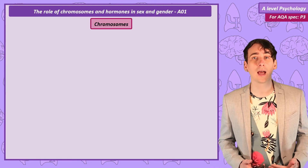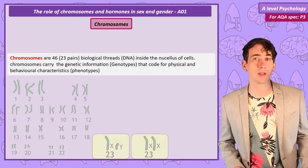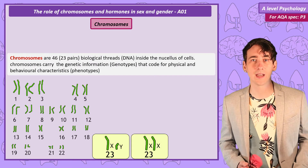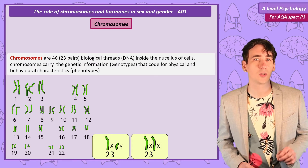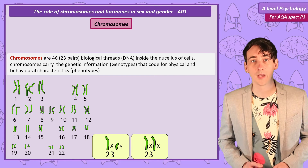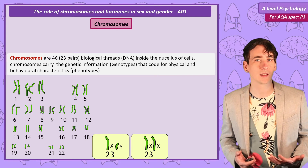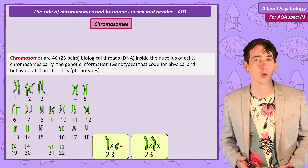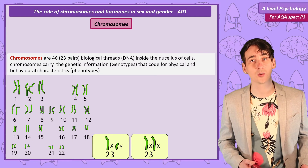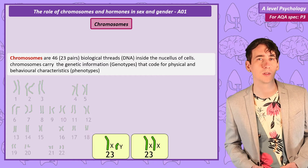Most people have 46 chromosomes. They come in 23 pairs and are made of long strands of DNA. They are found in the nucleus of your cells. Now because they are made of DNA, chromosomes hold your genetic information, your genotypes. These code for physical and behavioural characteristics we call phenotypes.